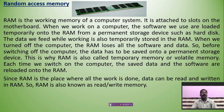The RAM loses all the software and the data — whatever data or software is present in the RAM will automatically get erased if the computer is shut down. So before switching off the computer, be careful — the data has to be saved onto a permanent storage device. This is why RAM is also called temporary memory or volatile memory. When you turn off the computer, the data in the RAM will automatically get erased.